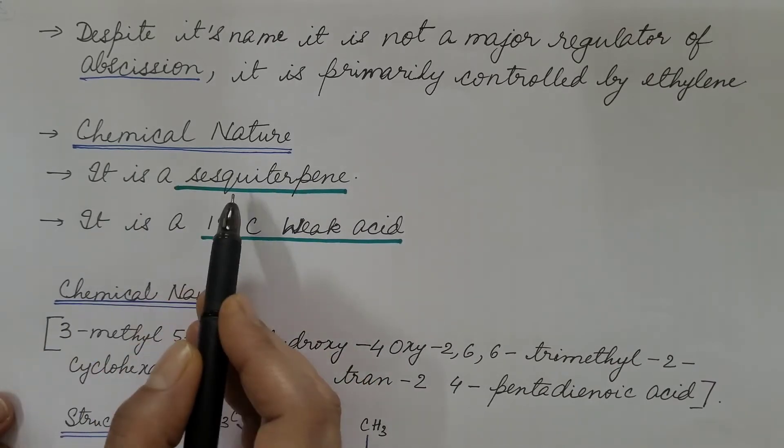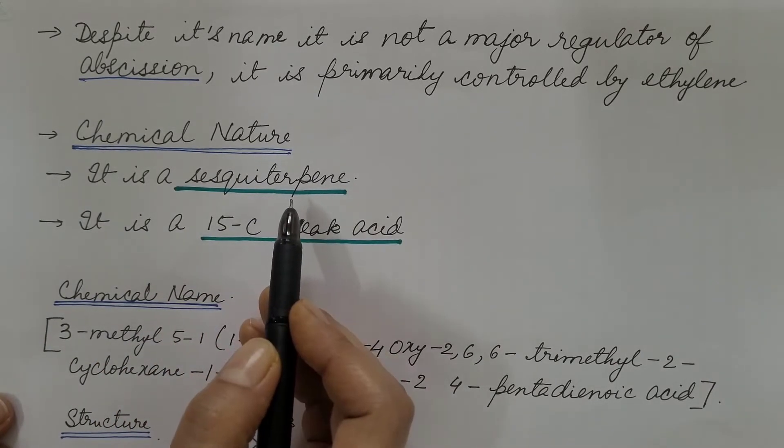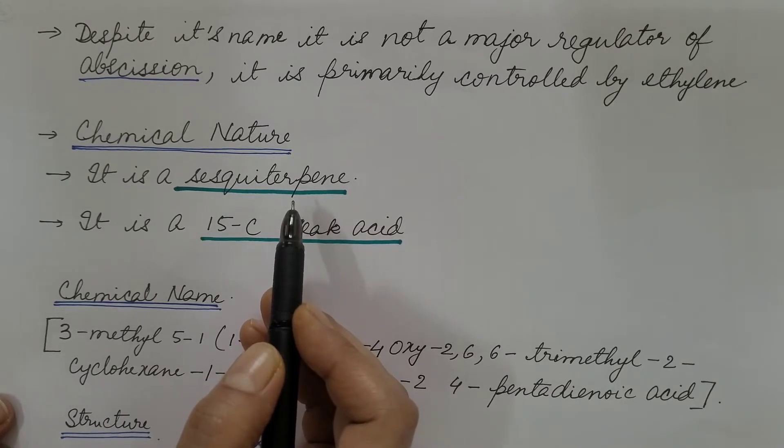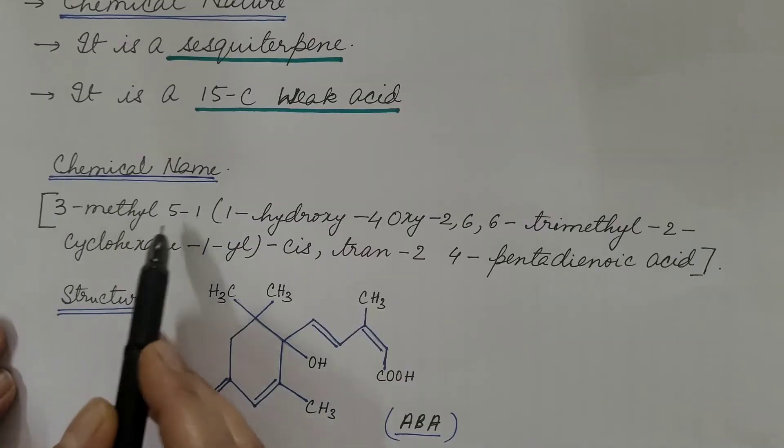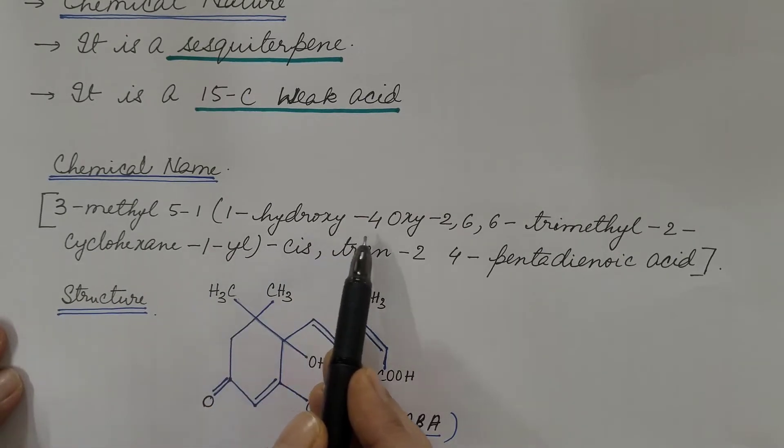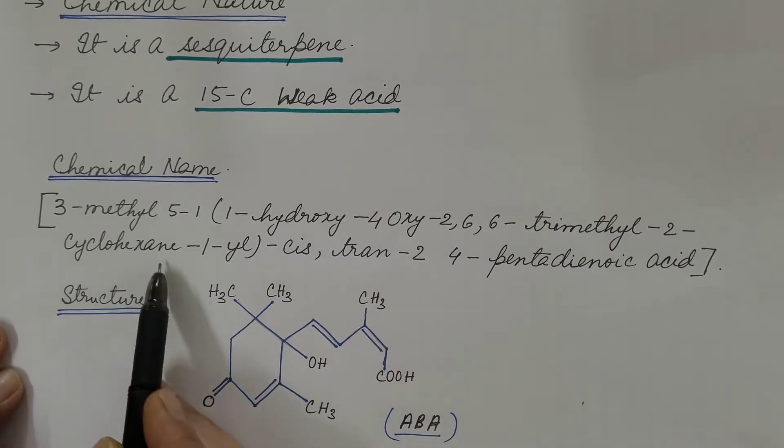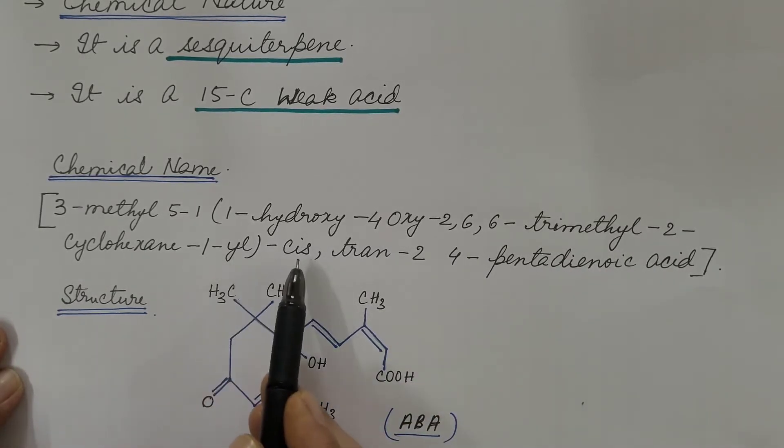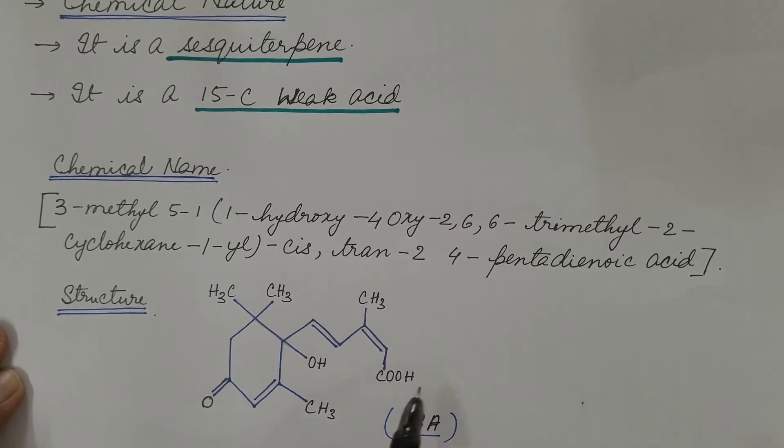Now the chemical nature. It is a sesquiterpene, a terpene with formula C15H24 or a simple derivative of such a compound. It is a 15-carbon weak acid. Its chemical name is 3-methyl-5-(1,1-hydroxy-4-oxy-2,6,6-trimethyl-2-cyclohexane-1-yl)-cis-trans-2,4-pentadienoic acid. This is its chemical structure.